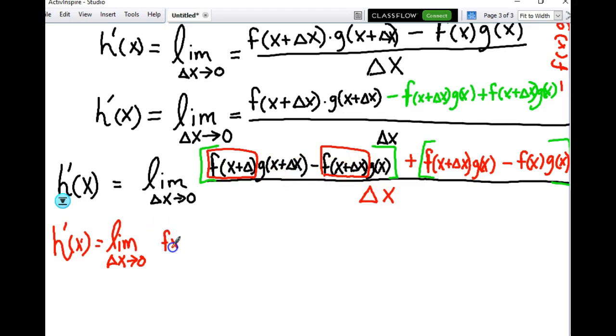f of x plus delta x is going to now be factored out. If I factor that out, what will be left, I'll keep the green parentheses for now. If I factor that out, this g of x plus delta x will remain. And minus g of x will remain for this portion. Right?